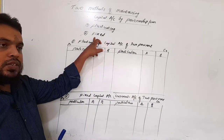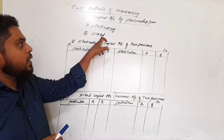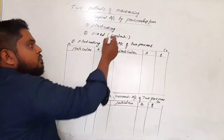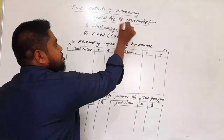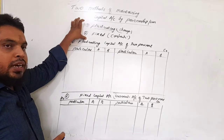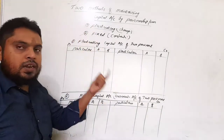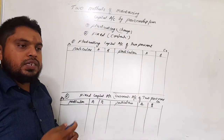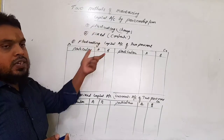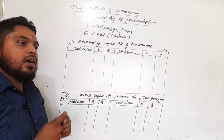Next is the fixed capital system. Under the fixed capital system, the capital — that is the investment of partners — will be unchanged. This capital will be constant. Partners will decide the method of maintaining capital. Under the fixed capital method, the capital that is the investment of a partner will be constant, that is unchanged, and will remain the same for all years.